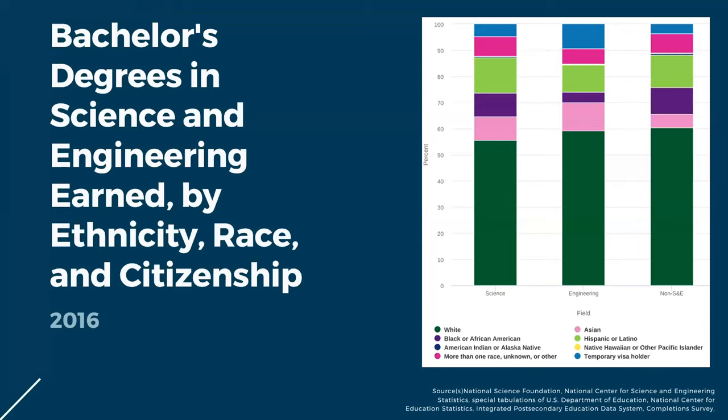Stratifying S&E degrees by race and ethnicity, about 56% of bachelor's degrees in S&E fields were awarded to whites in 2016. All three groups of underrepresented minorities earned a larger share of bachelor's degrees: Hispanics or Latinos earned 13.5% of science and 10% of engineering degrees; Black or African American students earned 9% and 4%, respectively; and American Indians or Alaska Natives earned 0.5% and 0.3%, respectively.